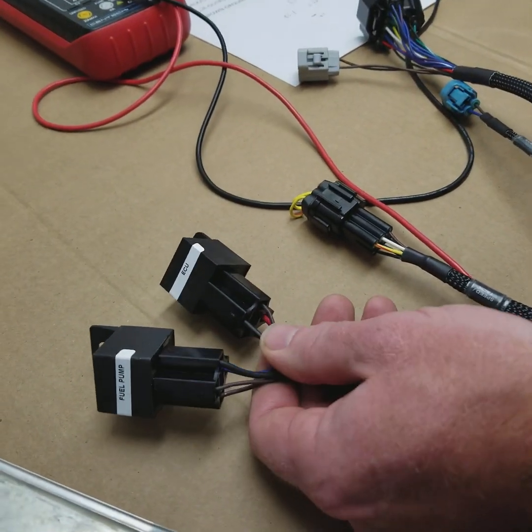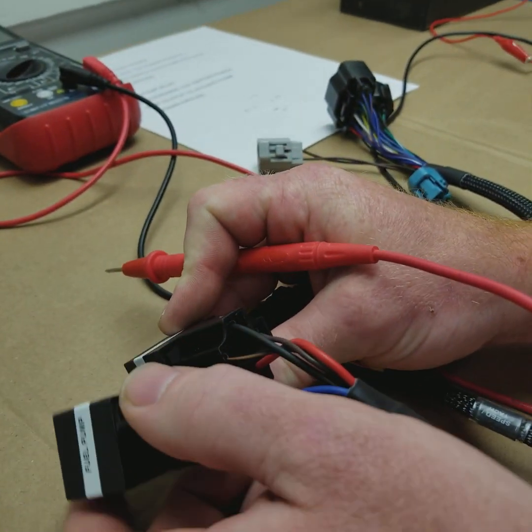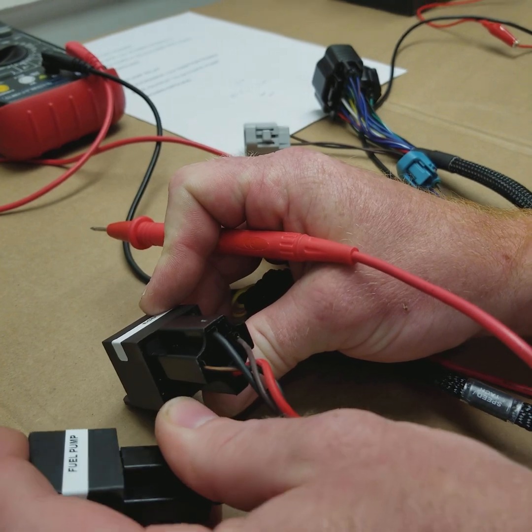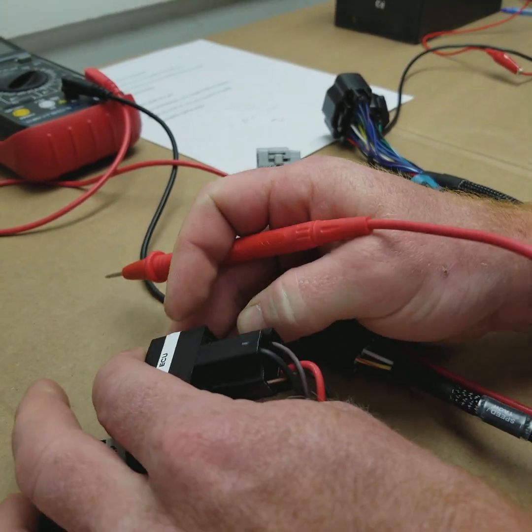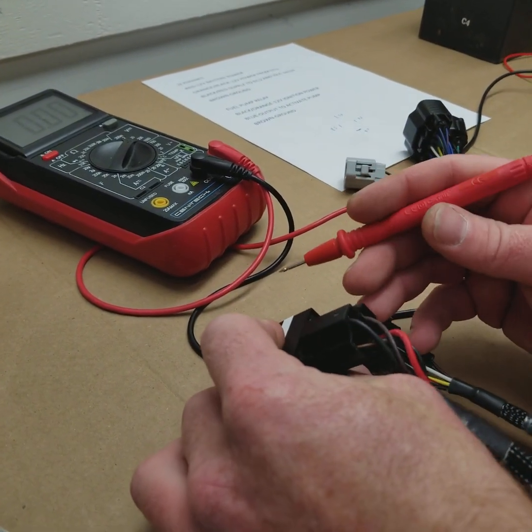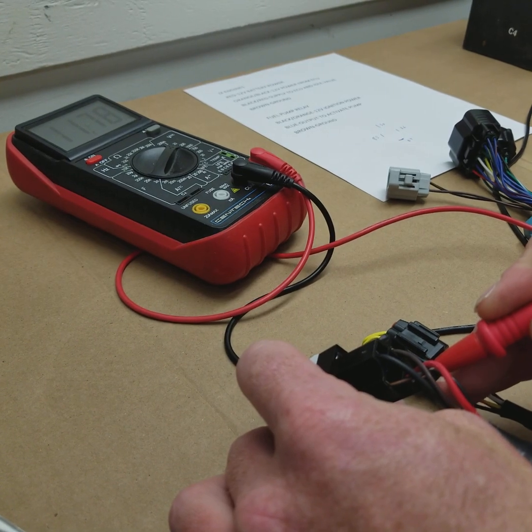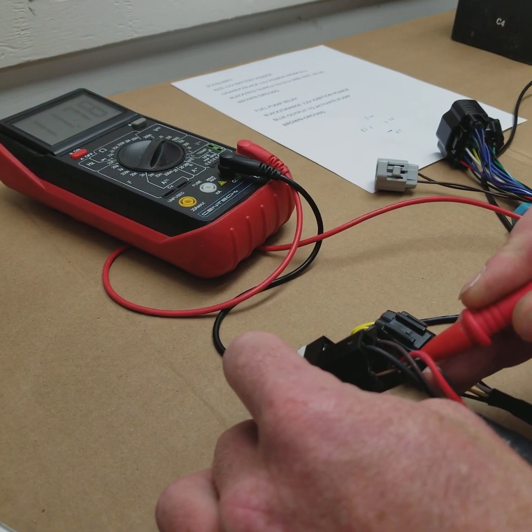Now the key difference here is this relay is supplied with 12 volts from the ECU instead of a ground. So what we'll do, we'll go over some testing. I've got it set to DC voltage. So on this red wire, we're seeing 12 volts. That's coming from our starter terminal there.